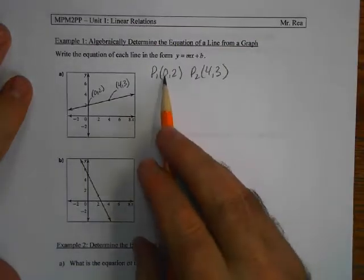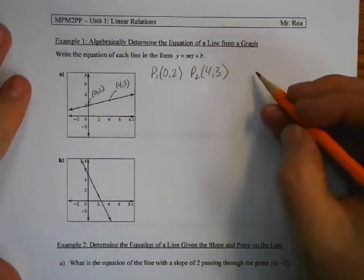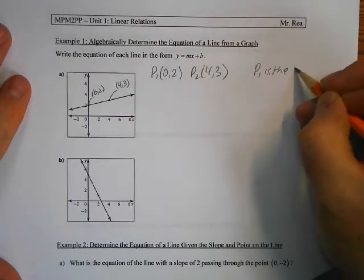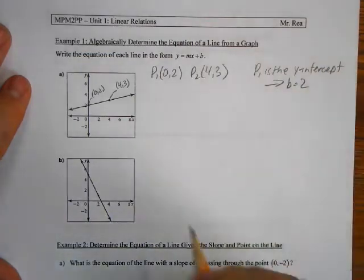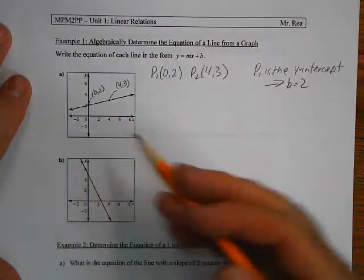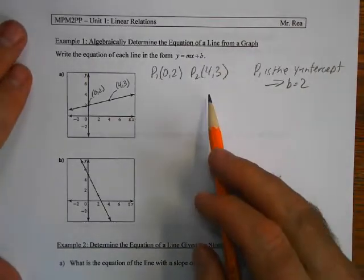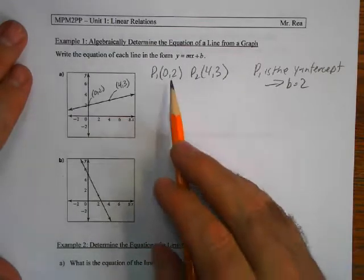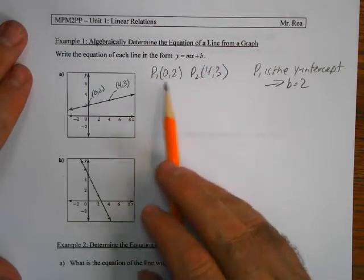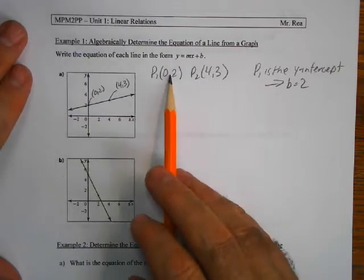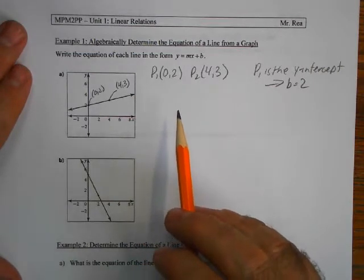Now here's an interesting thing — that point (0, 2) is the y-intercept. So P1 is the y-intercept, therefore b is equal to 2. We won't actually have to calculate b in the longer way. If one of the points is the y-intercept, we've saved ourselves a lot of work because it's right in front of our face. You can always tell the y-intercept because the x-coordinate is 0. So when you're given points, always quickly check: is one of these the y-intercept? Most of the time it's not, but when it is, it saves you some work.